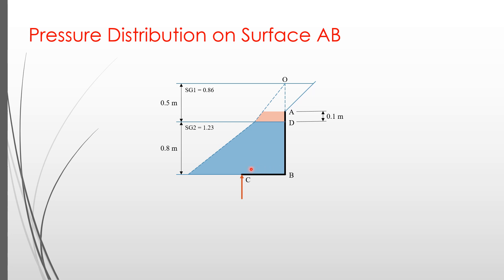First, let's consider the vertical surface AB. As the specific gravities, or mass densities, of the two fluids are not the same, the triangles representing the pressure distribution have different slopes. However, at the interface D, the pressure produced by the fluid above is the same with the pressure produced by the fluid below.